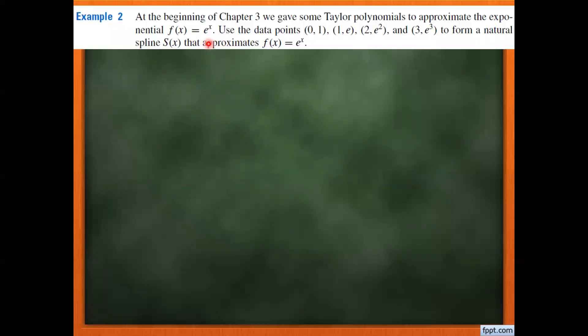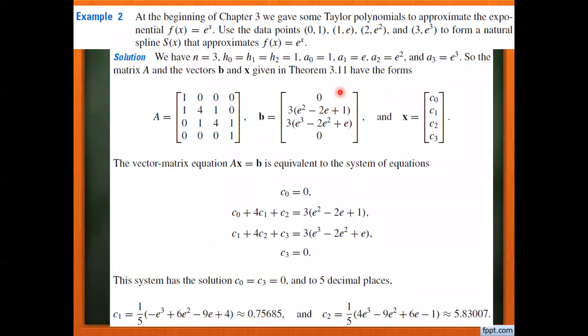Let's apply this approach to an example: spline interpolation of f(x) = eˣ using the natural spline condition with data points (0, 1), (1, e), (2, e²), (3, e³). With four data points there are three intervals, so we define three splines S0, S1, and S2. We need to calculate A0, A1, A2, B0, B1, B2, C0, C1, C2, and the corresponding D values.